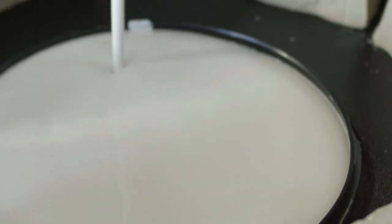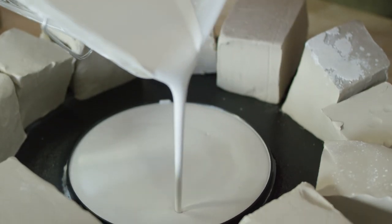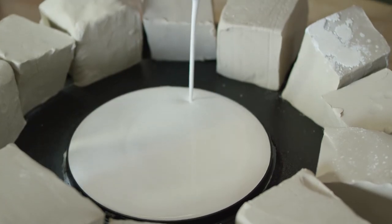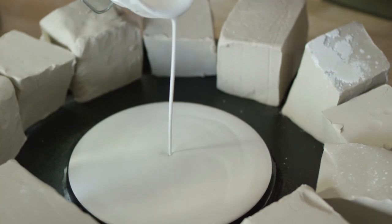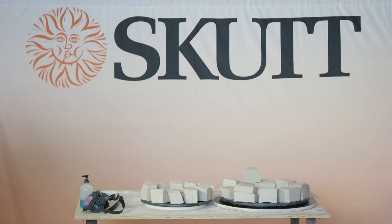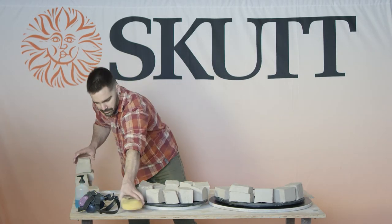After the plaster has been poured into the mold you need to let it sit for 10 to 15 minutes. Check it periodically. There will be a period of time where it's not hard like cement but it's also not liquidy.